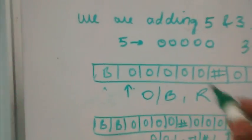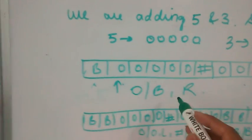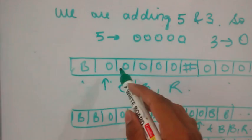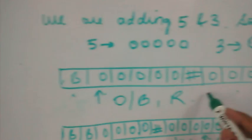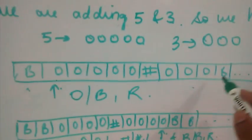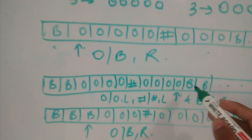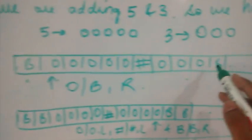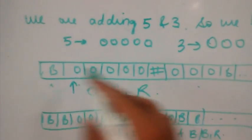Initially, we are going to replace this zero with a blank space and move the head to the right. This is the head. It will go from this position to the next and search for the blank space. When it finds the blank space at the right end, it will replace that blank space with a zero. This is copying the zero to that position.